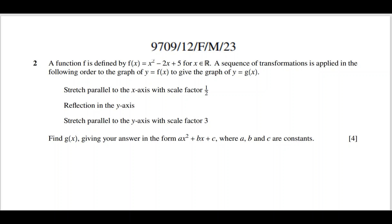Hello everyone. In this video we will look into the transformation questions from the 2023 question papers. The first question is from question paper 12FM23. A function f is defined by f(x) = x² - 2x + 5. A sequence of transformations is applied in the following order to the graph of y = f(x) to give the graph of y = g(x): stretch parallel to the x-axis with scale factor 1/2, reflection in the y-axis, stretch parallel to the y-axis with scale factor 3. Find g(x) giving your answer in the form ax² + bx + c where a, b and c are constants.